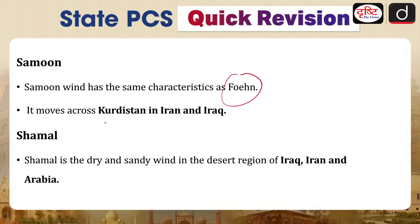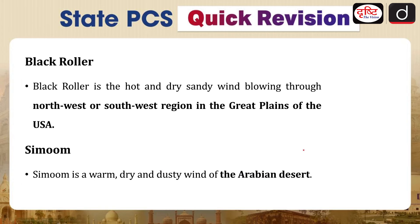Samoon wind has the same characteristics as Fohn and moves across Kurdistan in Iran and Iraq. Shamal is a dry and sandy wind originating from the deserts of Iraq, Iran, and Arabia. Black Roller is a hot, dry, and sandy wind blowing through the northwest or southwest region of the Great Plains of the USA. Simoon is a warm, dry, and dusty wind originating from the Arabian Desert.